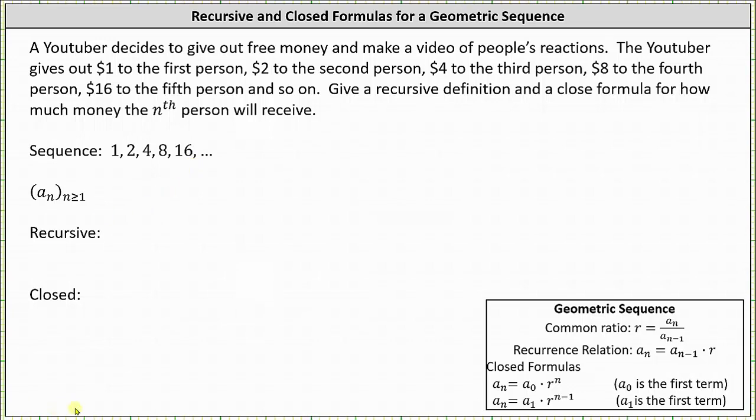Analyzing the sequence, notice how the pattern is 1 times 2 is equal to 2, 2 times 2 is equal to 4, 4 times 2 is equal to 8, and 8 times 2 is equal to 16. Because the sequence has a common ratio of 2, we should recognize this as a geometric sequence.